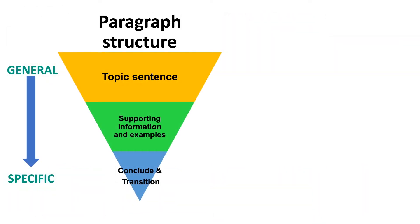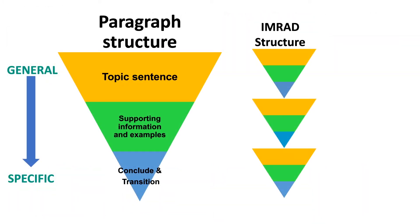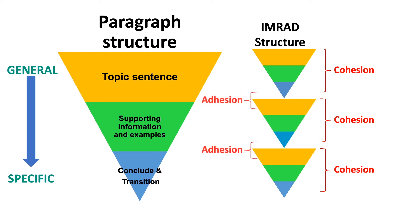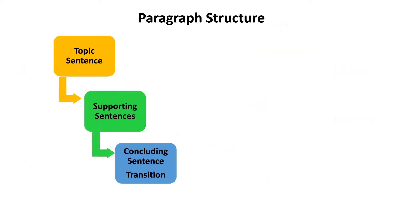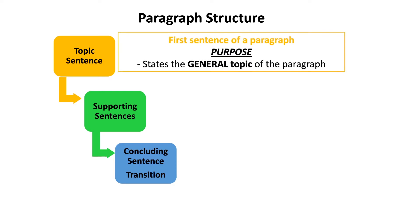This is where the general-specific structure is very helpful for establishing cohesive paragraphs. Our paragraph structure ends up following our general-specific structure across IMRAD — we want cohesive sections and adhesive transitions between those sections. We just need to understand how paragraphs are actually built and the purpose of each part. The first sentence, being the topic sentence, states the general topic of the paragraph and controls the main ideas that are going to be presented in the supporting sentences.